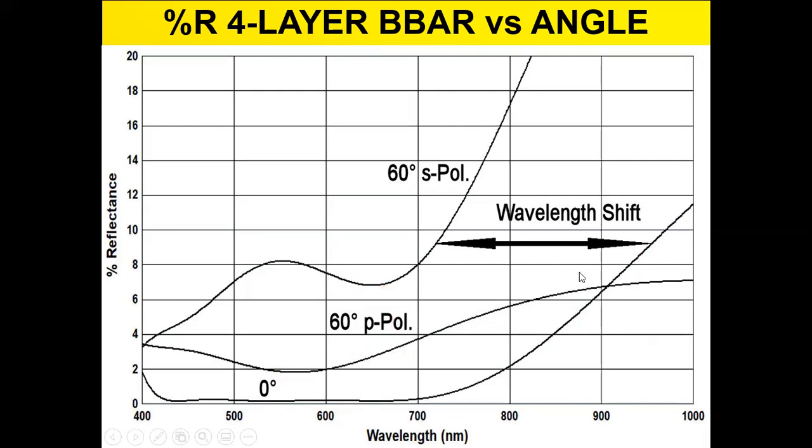This also illustrates the well-known property that if you have a coating at some performance here and you tilt it at an angle, the wavelength shifts to shorter wavelengths. You can imagine this curve here for the P or the S polarization will shift to be this one here, so I get this long wavelength shift in here.